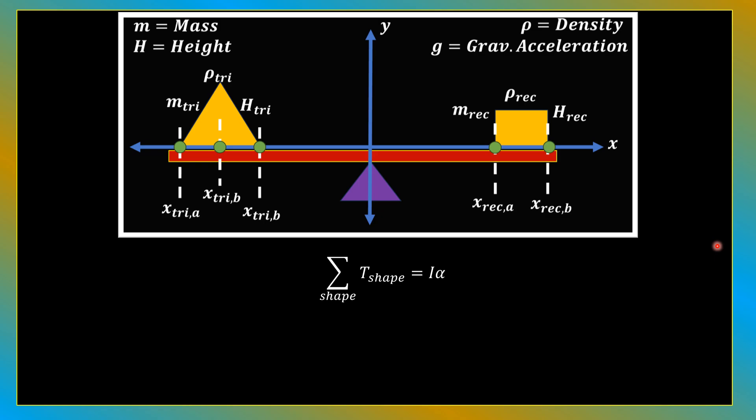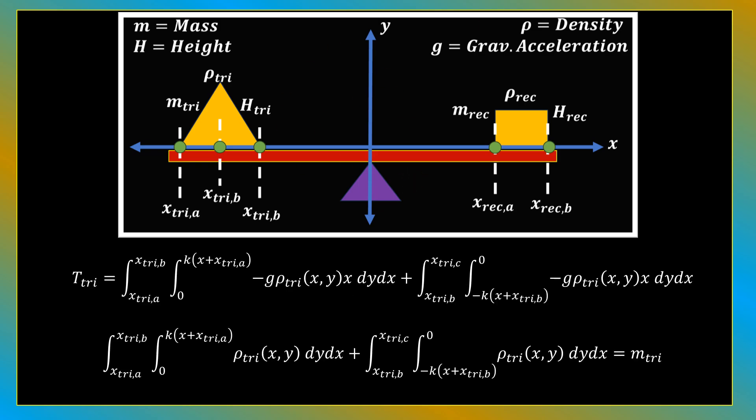Therefore, our plan will be to sum the torque contributed by the triangular mass and the rectangular mass, and determine whether that sum is positive or negative. If it's positive, then the lever will tip left or rotate counterclockwise. And if it's negative, then the lever will tip right or rotate clockwise.